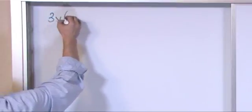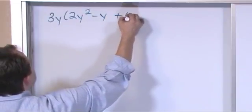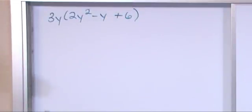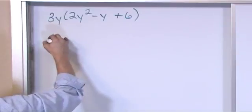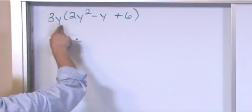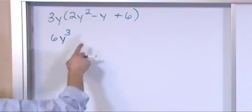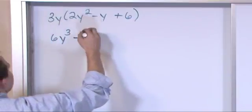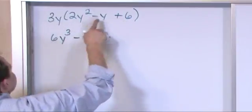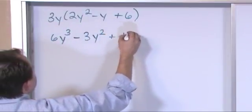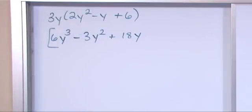What if you have 3y on the outside of (2y squared minus y plus 6)? Multiply term by term. Two times three is six, and y times y squared — same variable, add the exponent: one plus two is three — gives y cubed, so 6y cubed. Then negative: three y times y gives y squared, so minus 3y squared. Then six times three is eighteen, and y comes along. The answer is 6y cubed minus 3y squared plus 18y.